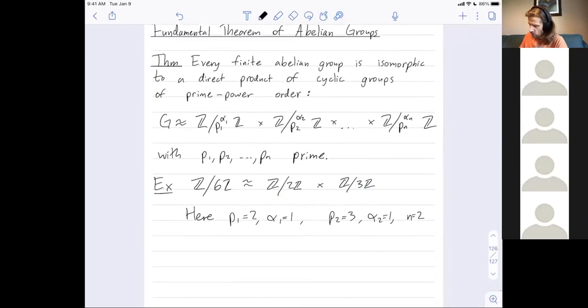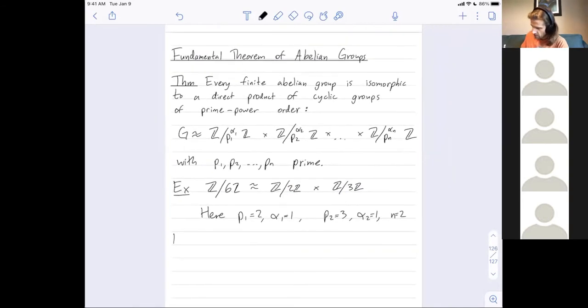Let's just do one more example. What if I ask you, what's the complete list of abelian groups of size 200? Let me factor 200 into its prime factorization. 200 is 8 times 25, or 2 cubed times 5 squared, up to isomorphism.